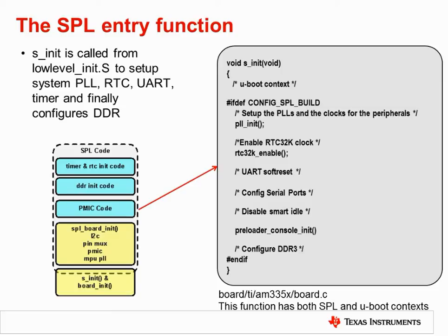Taking a closer look at the SPL code, which is entered at s_init, we see that the SPL is responsible for some low-level configuration: the phase lock loop for clocking, the real-time clock, the watchdog timer, and a few other interfaces. It also sets up the DDR so that the full uboot.img can be copied into external memory. Note the use of the #ifdef switch. Various preprocessor definitions set in the configuration file at /include/config/am335x_evm.h are used to include or exclude various code from the build. The config_SPL_build switch is used to either include or exclude the various SPL initialization routines.